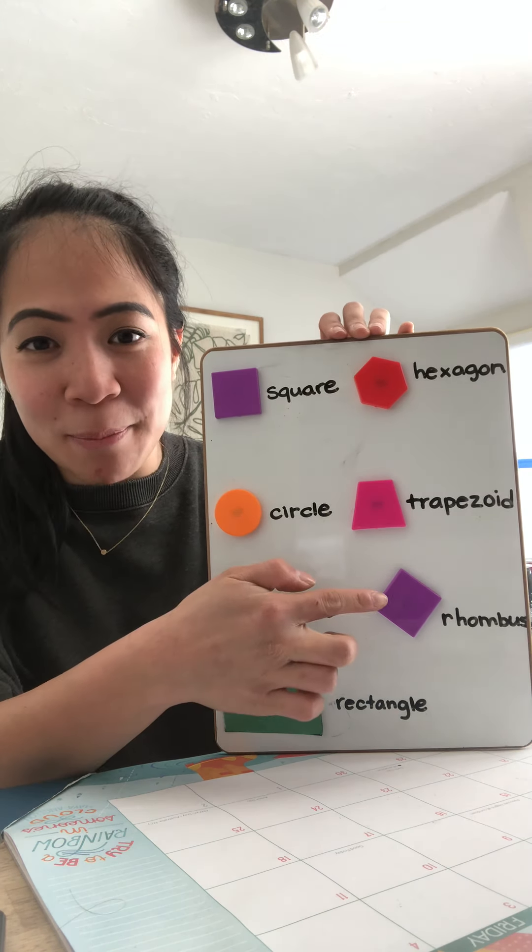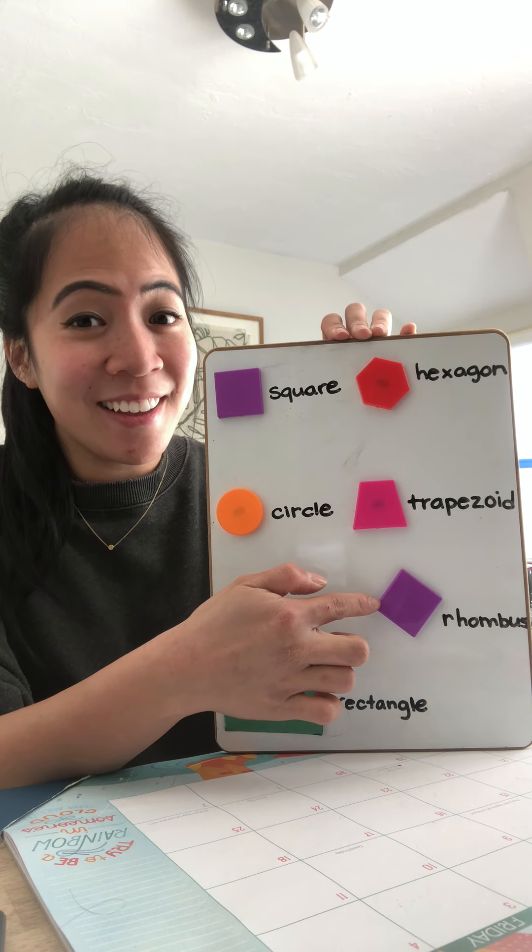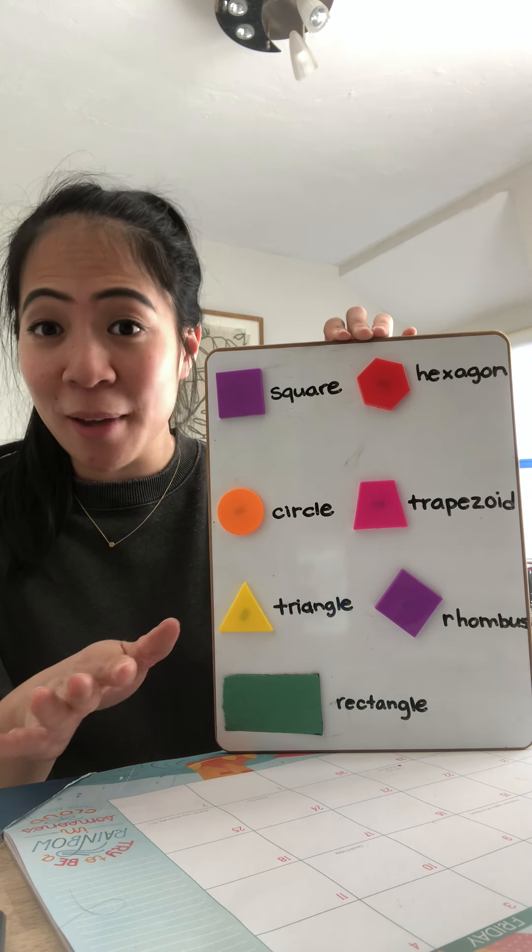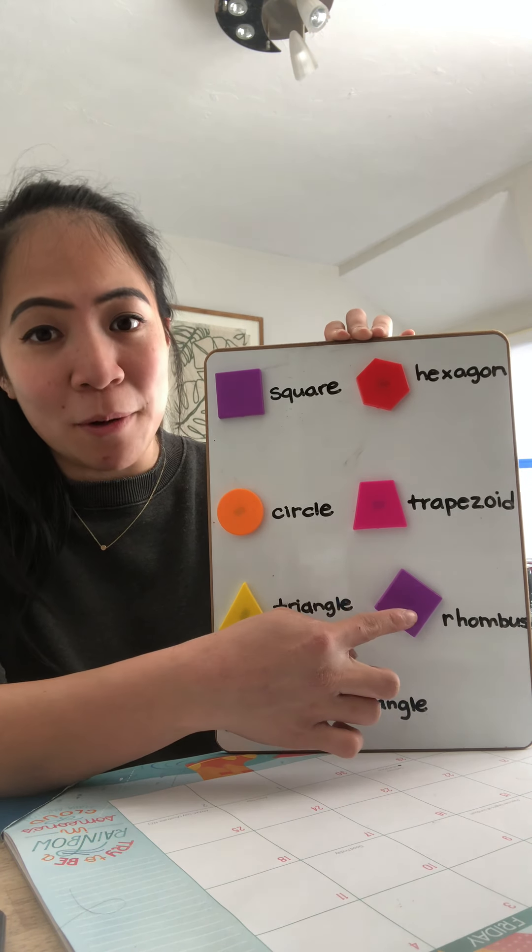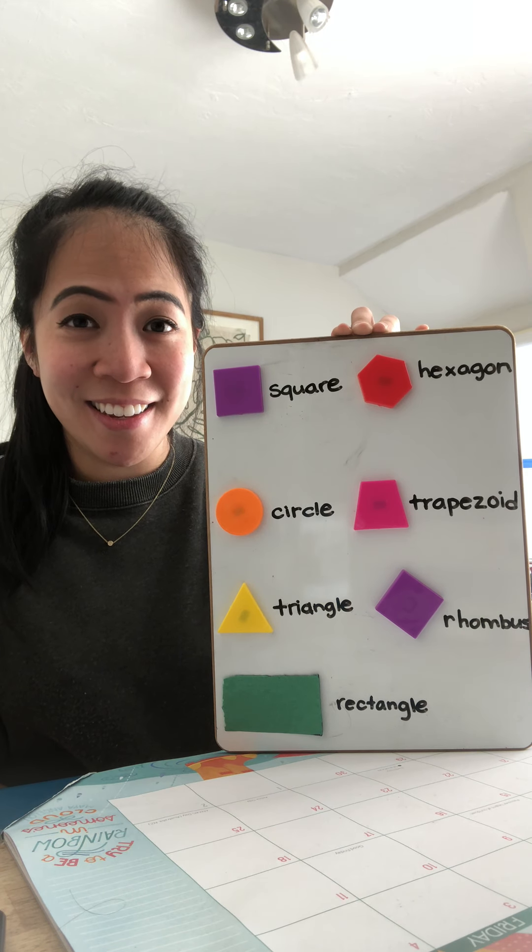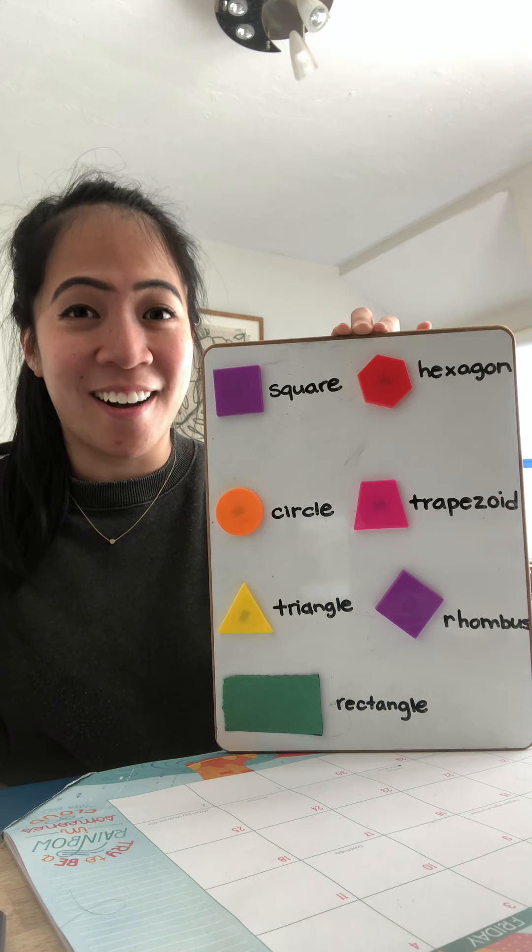And the last shape is called a rhombus. Some of you might call it a diamond, and that's okay. It's the same thing. But over here, we're going to call it rhombus. Can you say rhombus? Awesome.